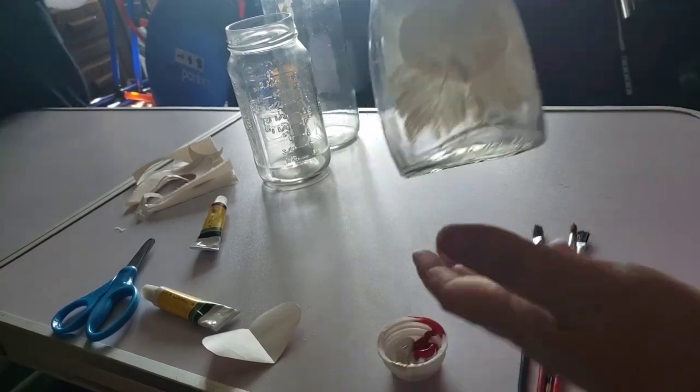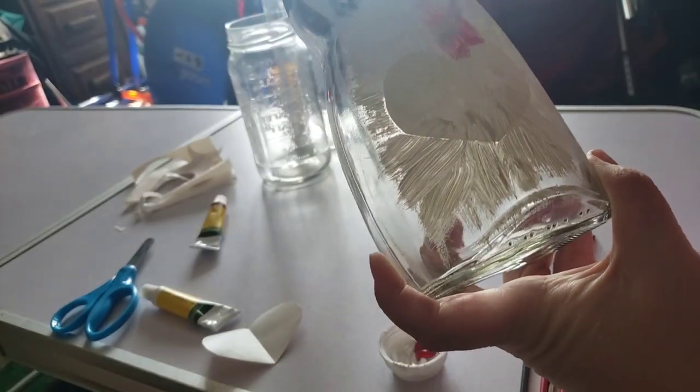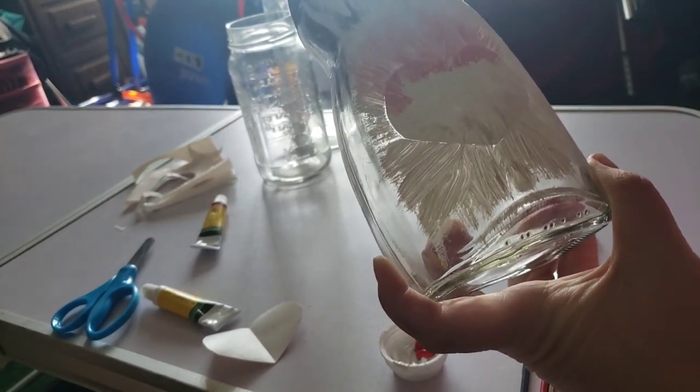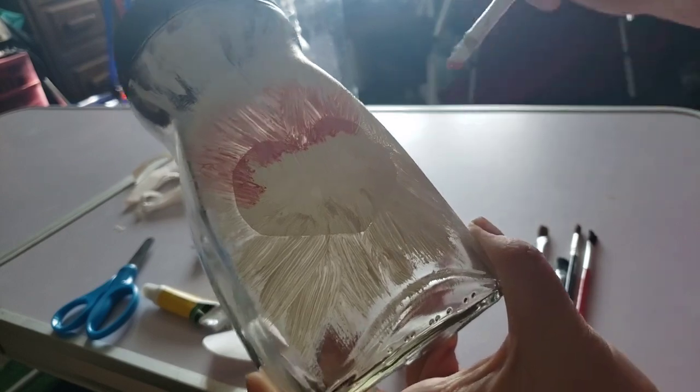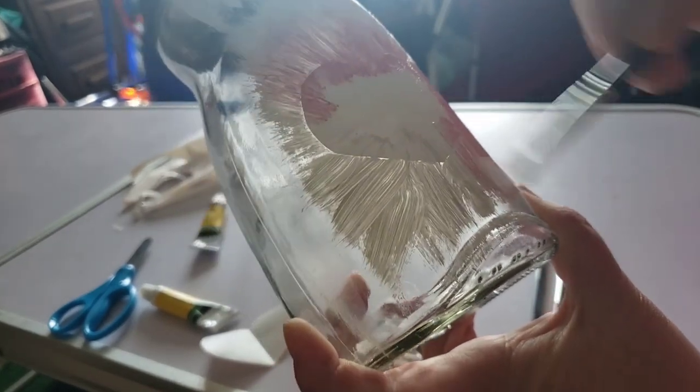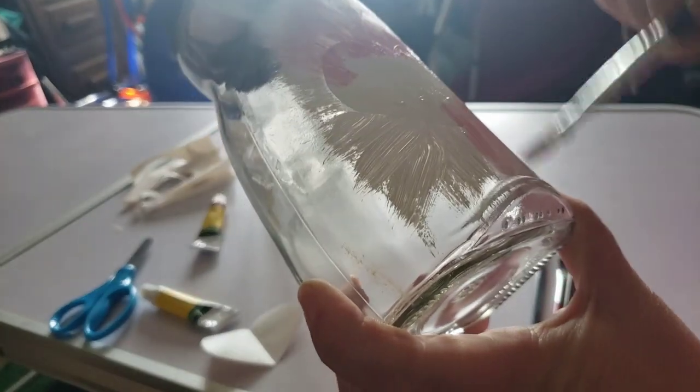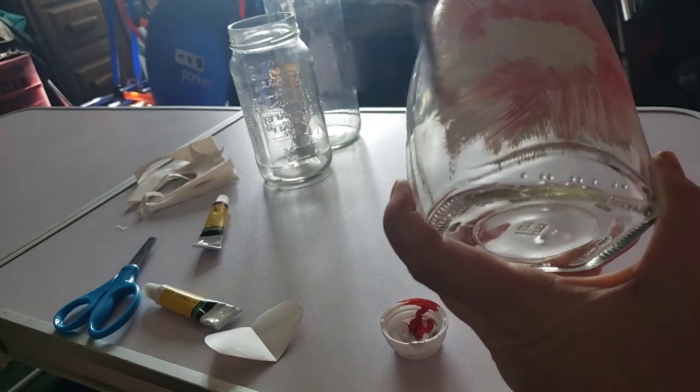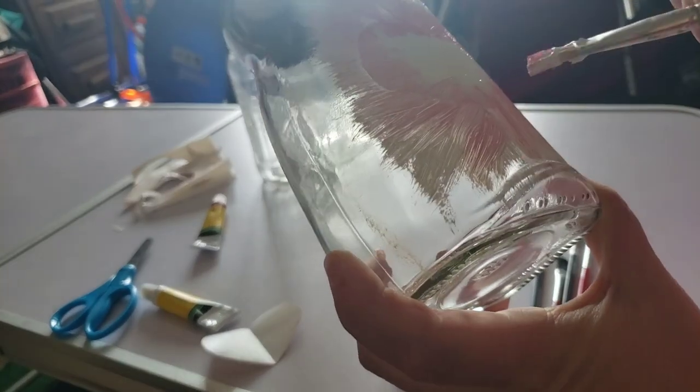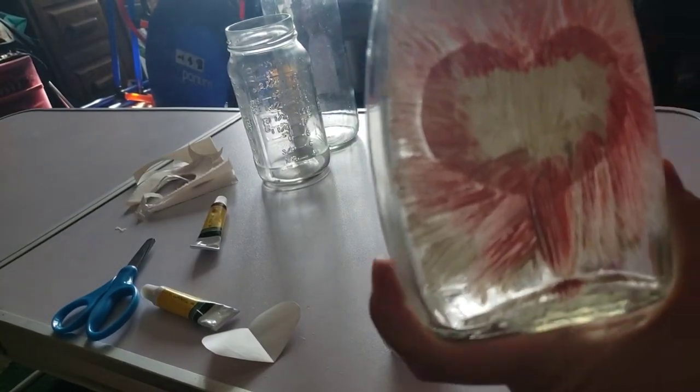I'm gonna accent around the heart with red and then as the red kind of mixes with the white it's gonna make pink. Then what we're gonna do is I'm gonna make some puppy chow and put some Valentine's M&Ms in it and then these are going to go in the blessing boxes.